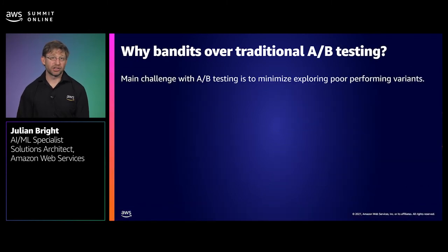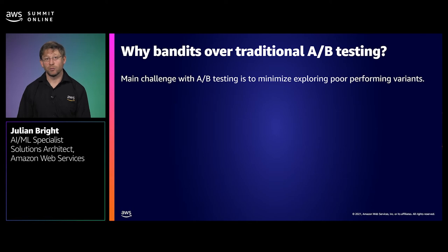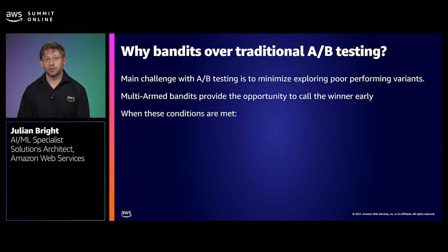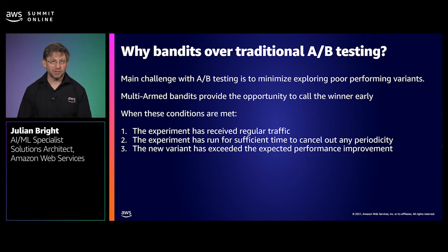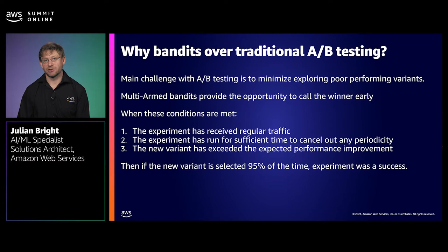So why bandits over traditional A-B testing? The main challenge with A-B testing is to minimize poor performing variants. This can happen when one variant is vastly inferior to the other and yet continues to receive equal amounts of traffic unless a test is cut short. Multi-armed bandits provide the opportunity to call the winner early when the following conditions are met: one, the experiment has reached regular traffic during the test period; two, the experiment has run for a sufficient period to cancel out any periodicity, for example over a full two weeks; and three, the new variant has exceeded the expected performance improvement, for example 5% over the baseline conversion. Then if the new algorithm is selected 95% of the time by our bandit strategy, we can call that experiment a success.